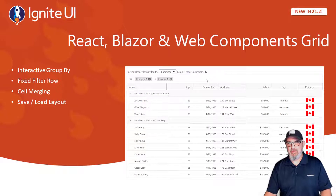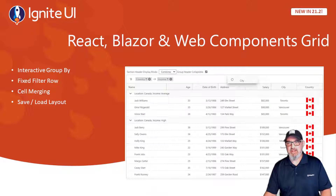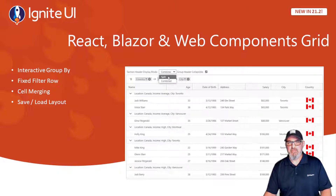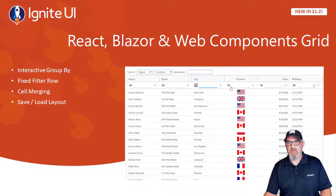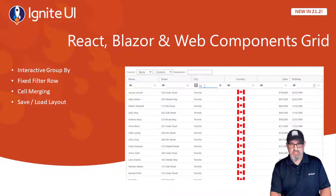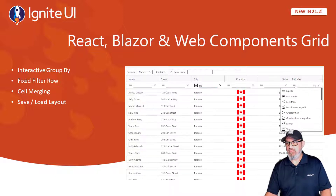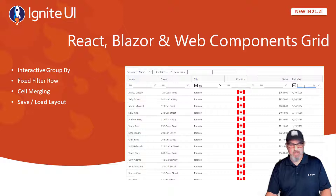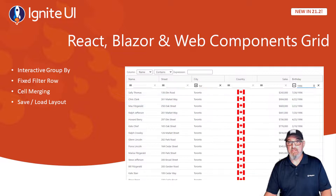In the React, Blazor, and Web Components grid, we've shipped much-requested features that will help you deliver amazing interactive experiences to your users, like Interactive Outlook Group By, with different options for how you can display this to your users. We've also shipped a filter row, which gives you the ability to do any type of filter based on the type of the column. For example, I can say that this city column should contain 'TRO' for Toronto, and maybe I want birthdays to be in the year 1996.